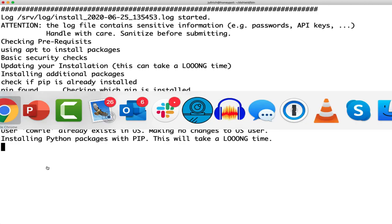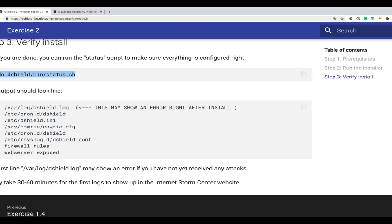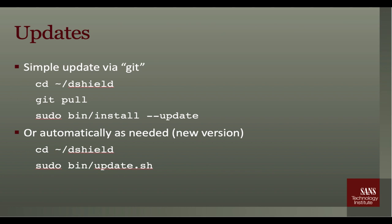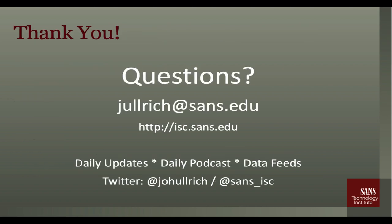Going back to Exercise 2: it covers status.sh, updating via git or the normal update script, and getting help. With git pull, you may also get beta versions. The ISC DShield Slack channel is the best and quickest way to get help if you run into problems. That's how to set up a honeypot and contribute your data. If you have any questions, please let me know — my email address is here too. Thanks, and I hope to see your data soon!